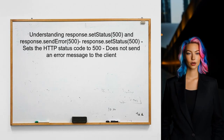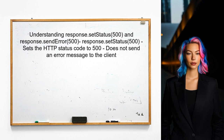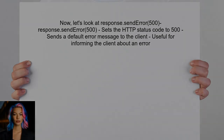To understand the difference between response.setStatus(500) and response.sendError(500), let's start with response.setStatus. This method sets the status code of the response, but does not send any error message to the client. In contrast, response.sendError(500) not only sets the status code to 500, but also sends a default error message to the client. This is useful when you want to inform the client about an error that occurred.